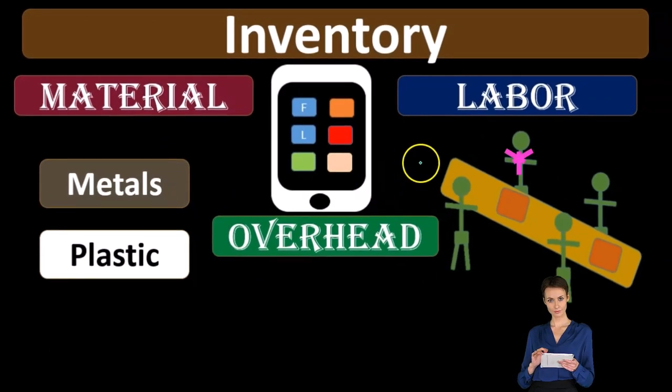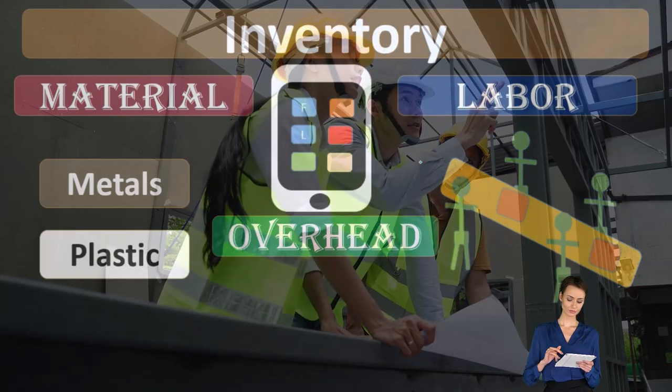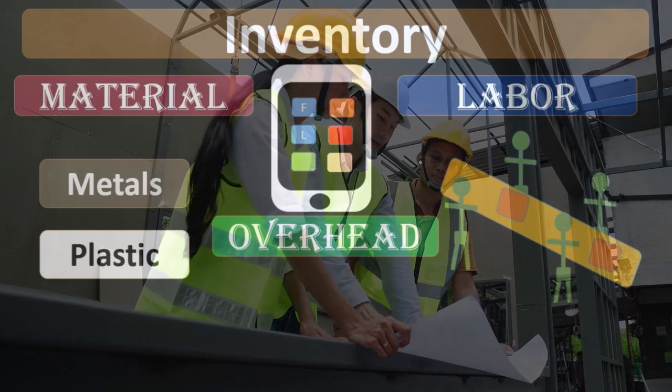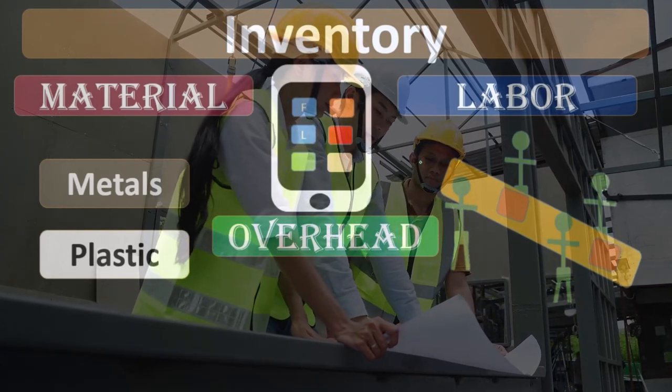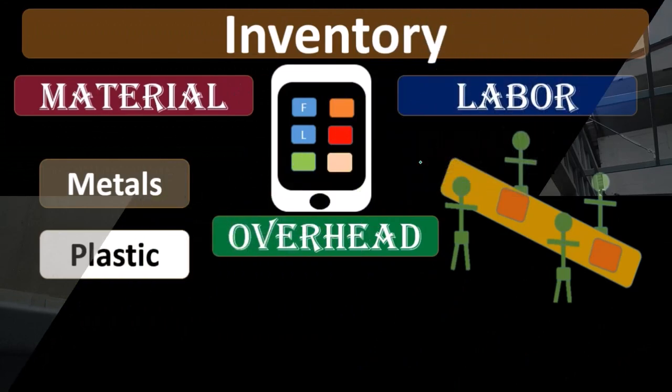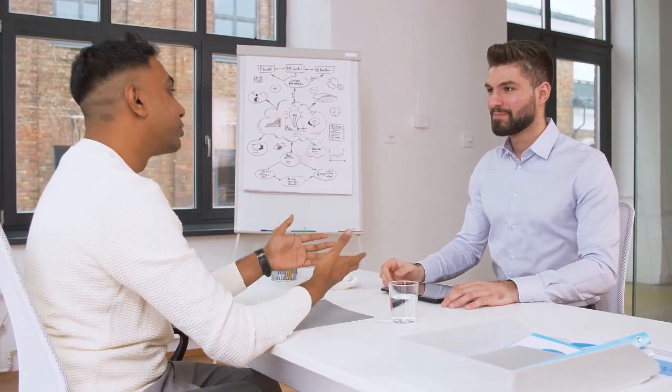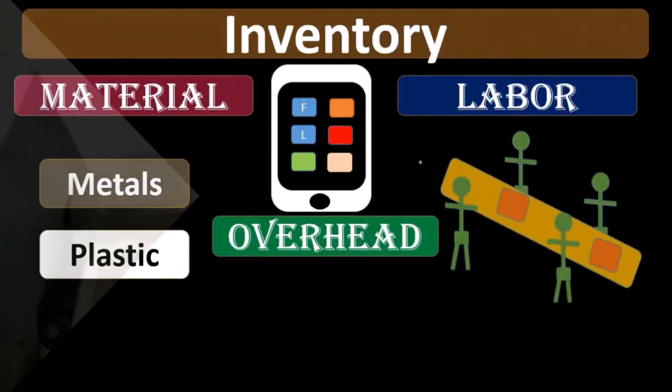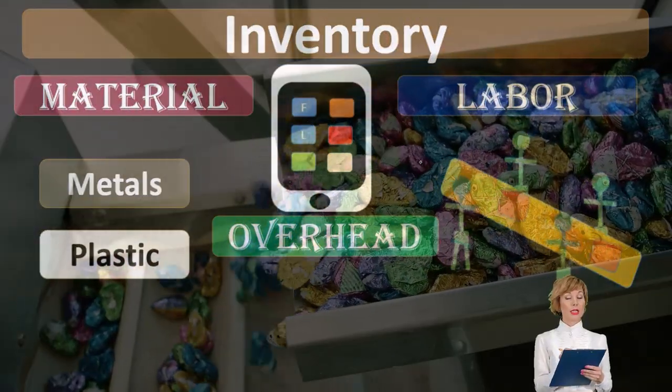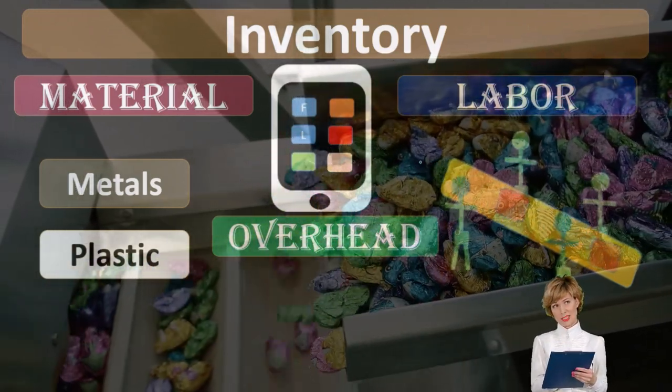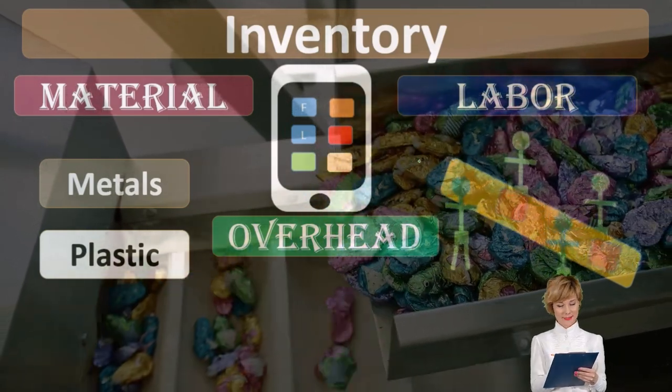Now, if that labor can be applied directly to the unit or the process or the batch, then we're going to call that direct labor because we can apply that out directly. If, however, it's something that cannot be applied directly to the batch, say we're talking about a supervisor or something like that which is supervising for a large production process, we still have the cost of that supervisor that should be in the production process, but we can't apply it directly out in a job cost system to the job or a process cost system to the process, and therefore we would have to put it into overhead.